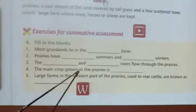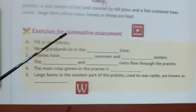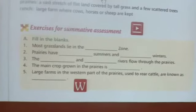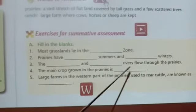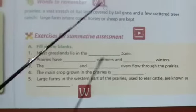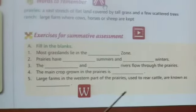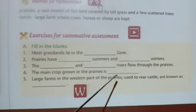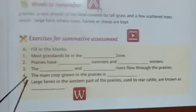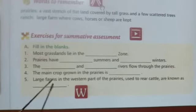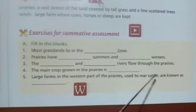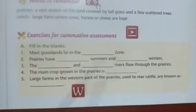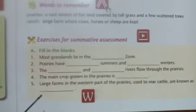The main crop grown in the Prairies is wheat. This region is called the wheat basket of the world. Fifth fill-up: large farms in the western part of the Prairies used to rear cattle are known as — what is the answer? Ranches.